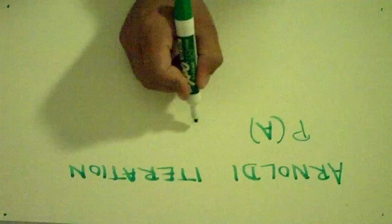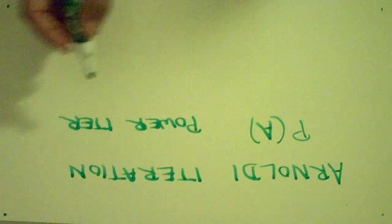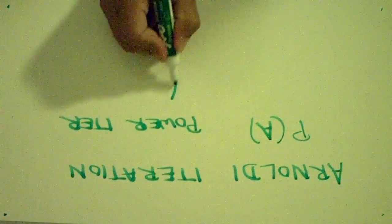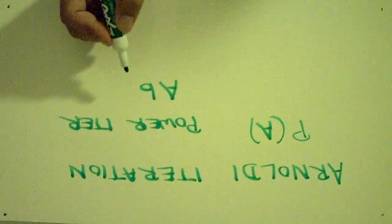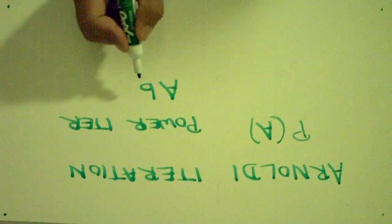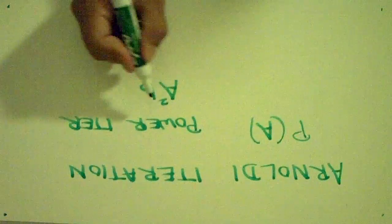So, to find the eigenvalues of large sparse matrices, one method is to use the power iteration. The power iteration works as follows. You start with the matrix A, you multiply it by an arbitrary vector B, giving you a vector. You then multiply this vector again by matrix A, giving you A squared B.